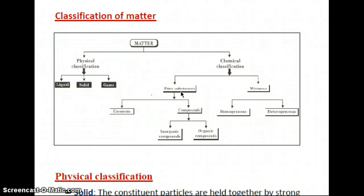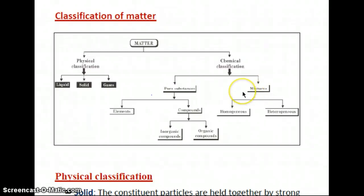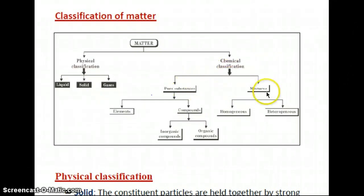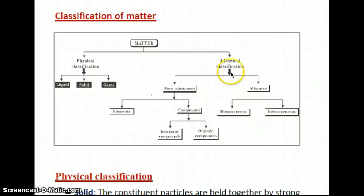One more difference between pure substances and mixtures: mixtures can be separated by physical methods such as evaporation, filtration, and fractional distillation. But pure substances cannot be separated by physical methods. Chemical classification has two types: pure substances and mixtures. Pure substances have fixed composition of constituent particles; mixtures don't. Pure substances cannot be separated by physical method; mixtures can be separated by physical methods.